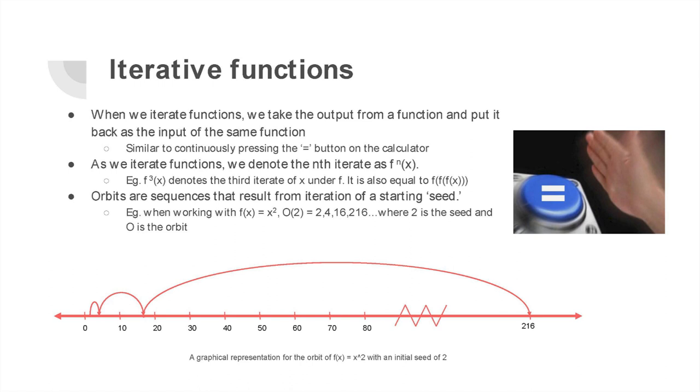An example of an iterative function would be this. We start at two, put it into x, and then put the output right back in. We get an orbit, which is just a sequence of numbers that comes out of it.